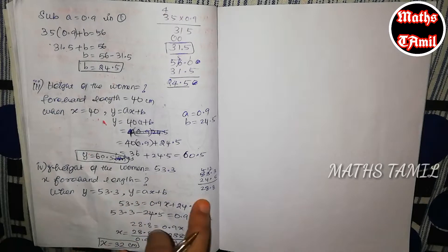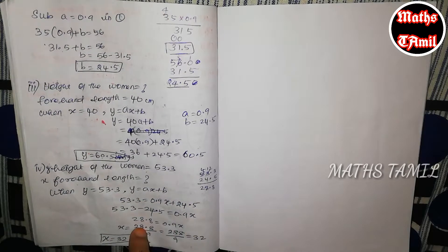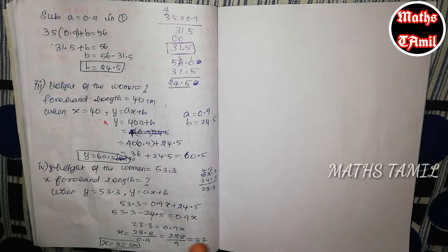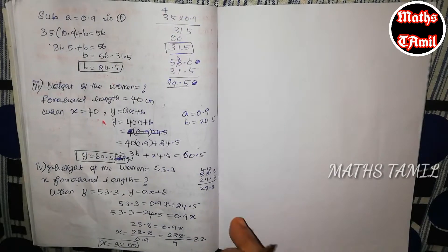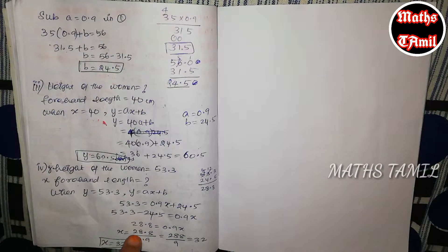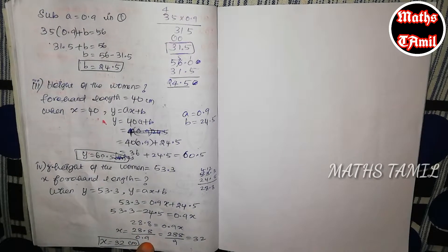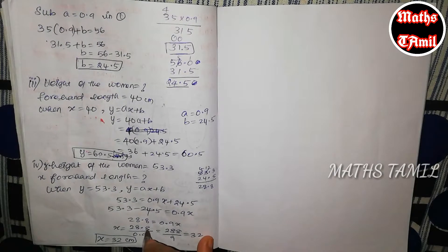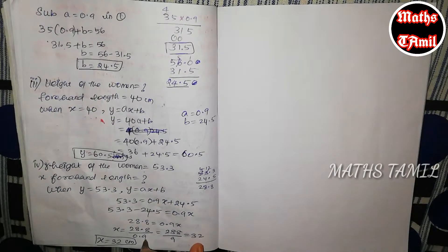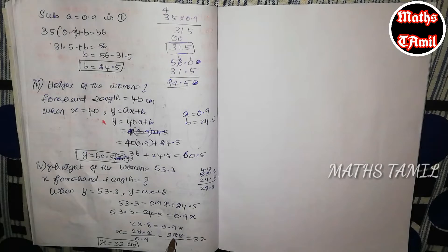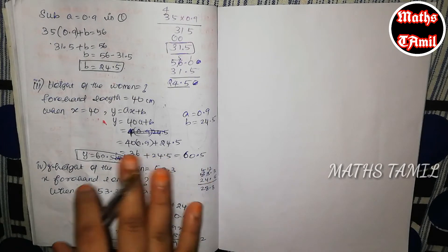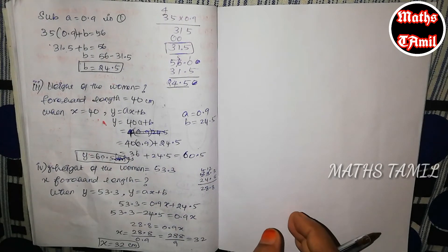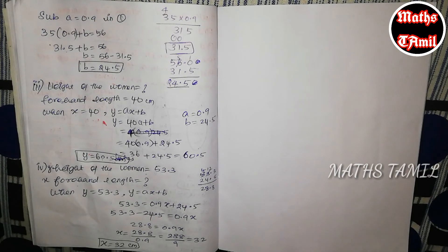If you have any doubts, comment in the comment section. If you work out the values: 28.8 divided by 0.9, multiply into 10, gives 288 divided by 9, which equals 32. If you have any doubts, comment in the comment section. Like this video and share it with your friends. Thanks for watching.